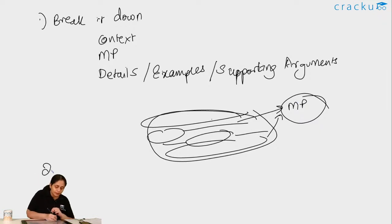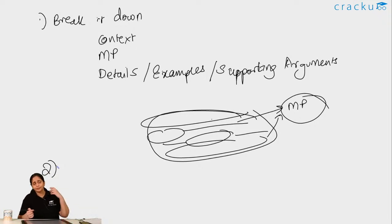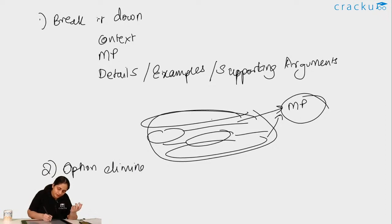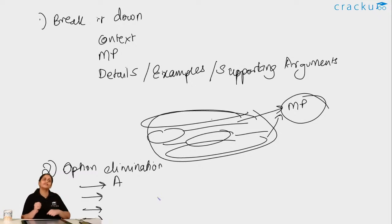The second thing you should do is option elimination. You can have multiple ways of phrasing a para-summary, so the options are essentially limitless. But some options have to be clearly wrong for the right option to be right. Whenever you do option elimination, look at the remaining options and identify distortions. A distortion means the option distorts what is given in the paragraph — the logic doesn't match, the facts don't match, the degree of the assertion doesn't match.